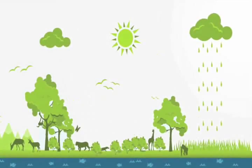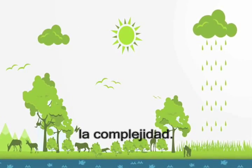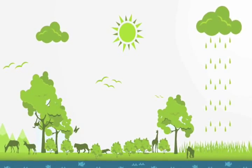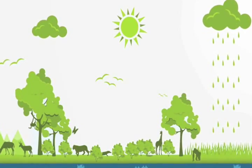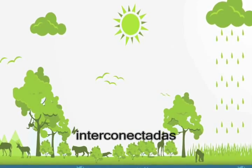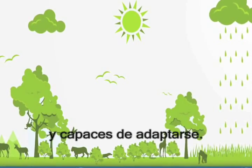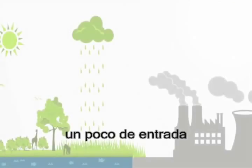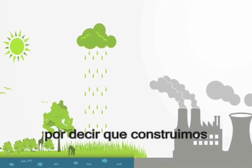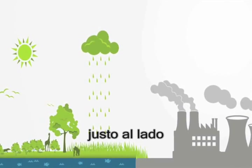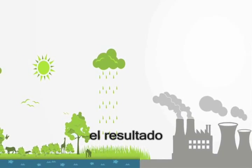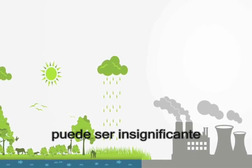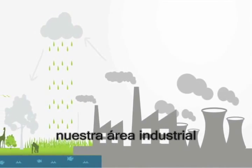Because linear systems are relatively easy to model and control, much of our modern science, engineering, and management practices rest upon this type of linear understanding of the world. Now let's think about what happens when we turn up the complexity. Take an example of an ecosystem. Ecosystems typically have many elements or creatures. These creatures are diverse, interconnected, and capable of adaptation. Now let's add some input to this system — say we build an industrial zone right next to it, emitting pollution. Given the ecosystem's capacity for adaptation, the result may well be negligible to us initially.